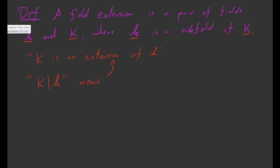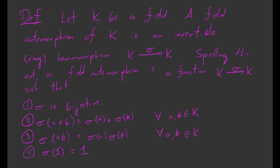Let's move on to the next definition, which is of a field automorphism. Let k be a field. A field automorphism of k is just an invertible ring homomorphism from k to itself.